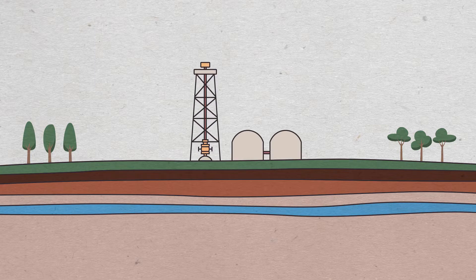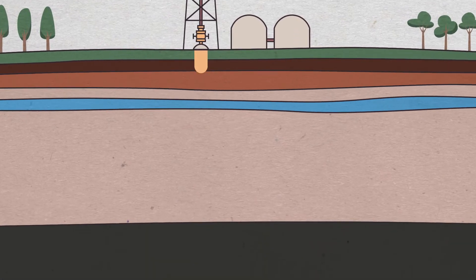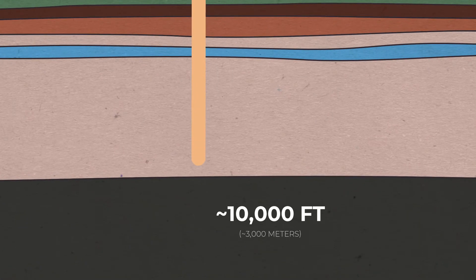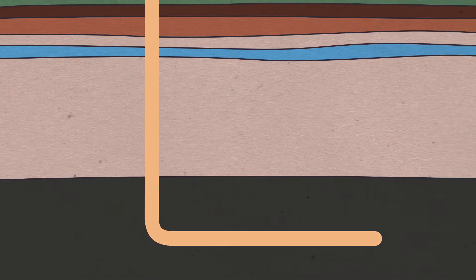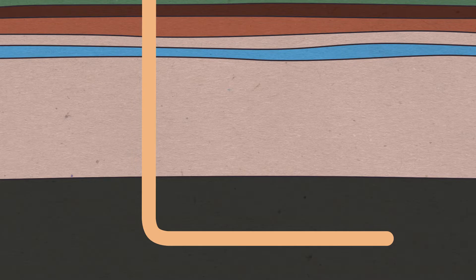First, a drilling rig is used to drill the well into the target formation, typically around 10,000 feet deep. Then a 90-degree turn is made and another 10,000 feet is drilled laterally through the producing formation.